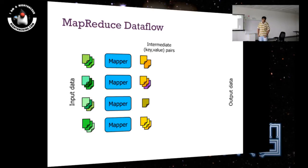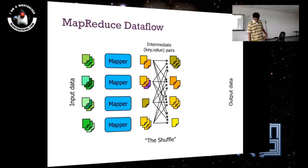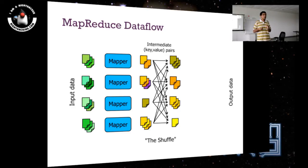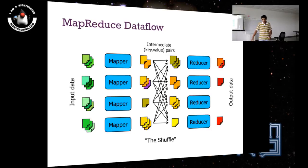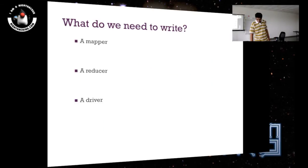Recap of the data flow: you have input data feeding into mappers, which create intermediate key-value pairs. Those flow into a shuffle phase where all your keys get aggregated — like how your employee name and address became one array collection. This shuffle phase is done by the framework; we don't have to do anything here. Then data goes into your reducer where you can run your aggregation logic.